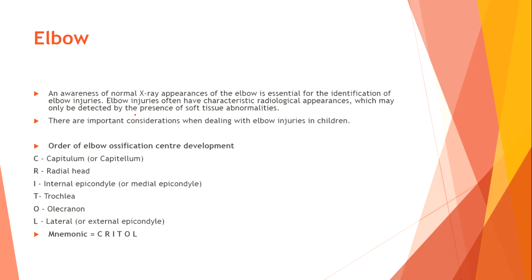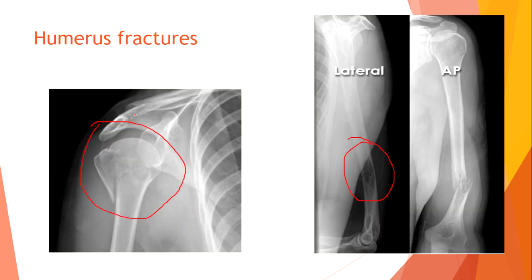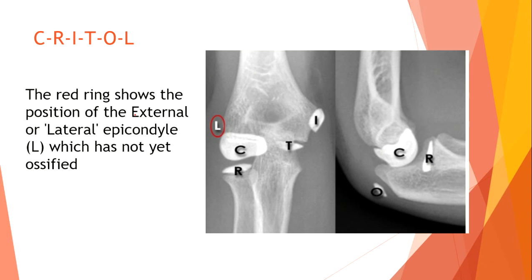On this example we can see the epicondyle and olecranon. The lateral epicondyle is not visible here because it is not yet ossified — this is a young person, so that part is not yet ossified.